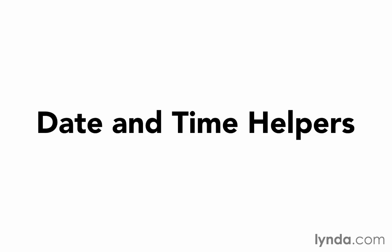Rails offers many tools to assist us with date and time calculations, as well as formatting of dates and times for output. These methods aren't exactly helper methods like the other ones we've been looking at, because these methods are available throughout Rails, not just in the views. These methods are additions that Rails makes to Ruby's core classes. Because they're available anywhere, the Rails console is a great place for you to try them out and experiment.